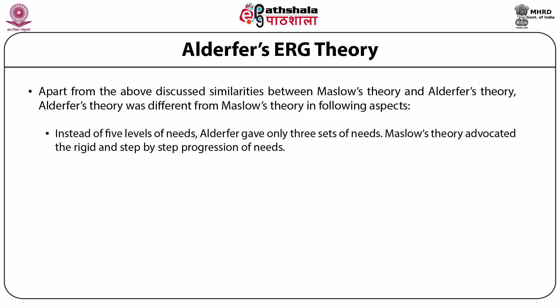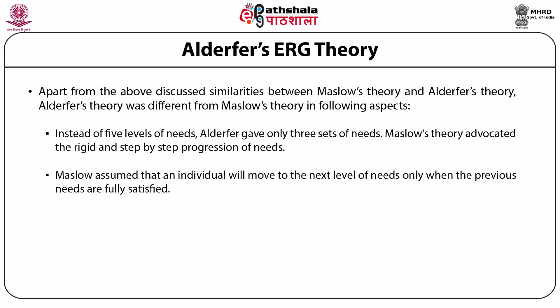The second difference is that Maslow's theory advocated a rigid and step-by-step progression of needs, whereas Alderfer's theory assumed that more than one need may be operative at the same time. Maslow's theory assumed that an individual will move to the next level of needs only when the previous needs are fully satisfied.